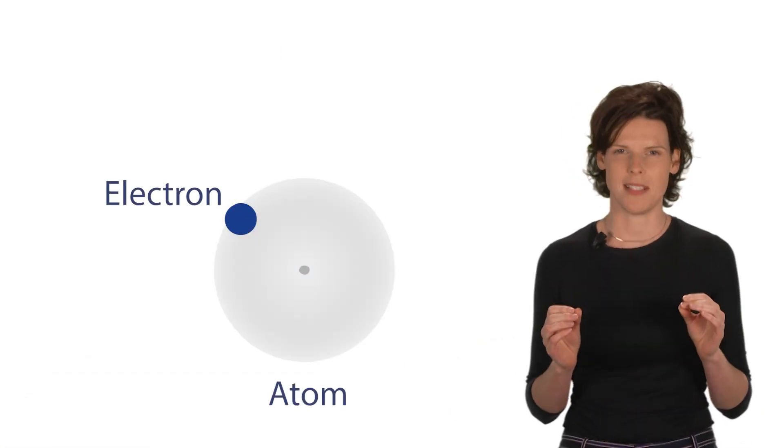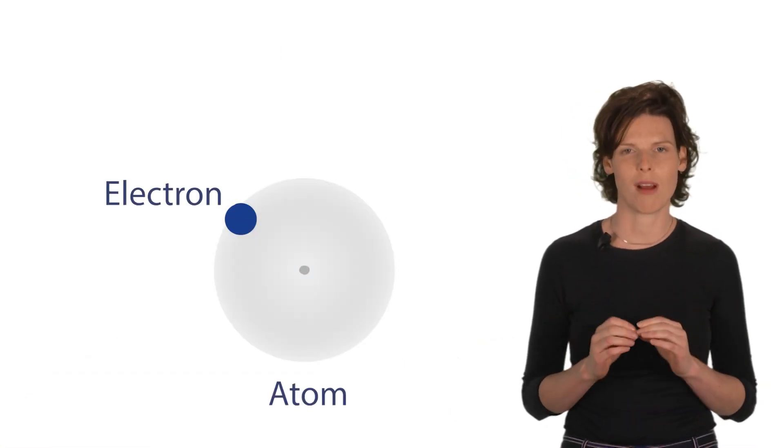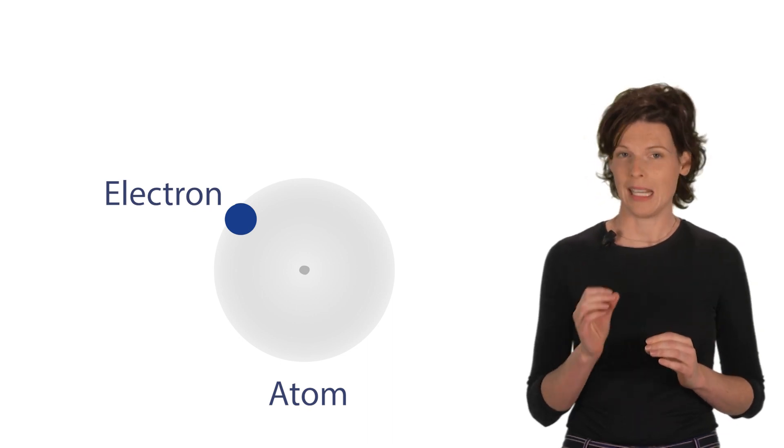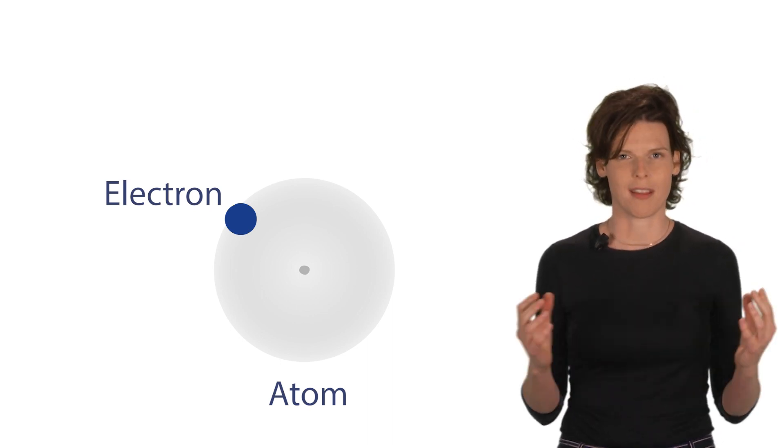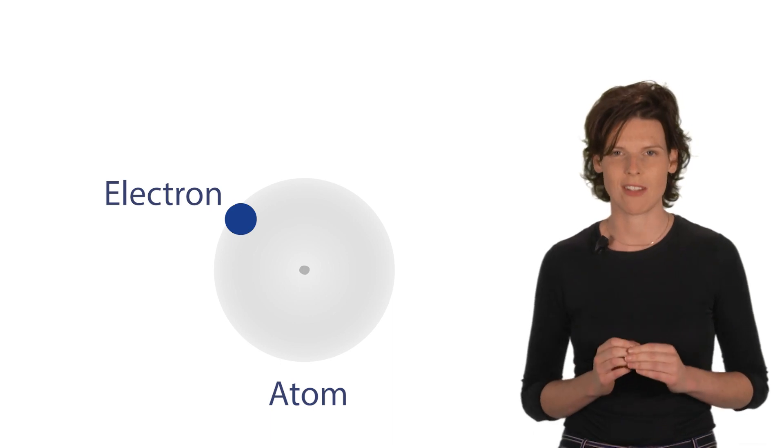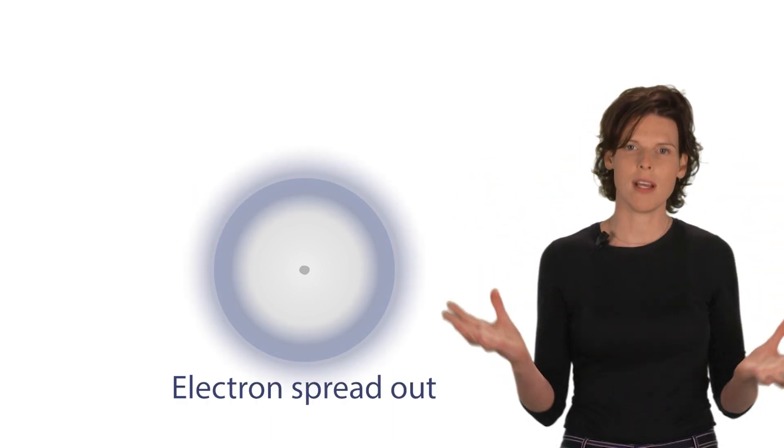We enter this tiny world that follows its own rules. Inside the atoms, electrons are located around the center. Electrons, in contrast to everything around us, do not necessarily have a fixed position. They can be spread out in an area around the center.